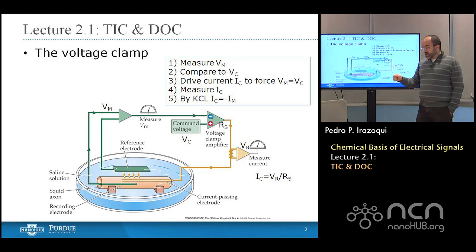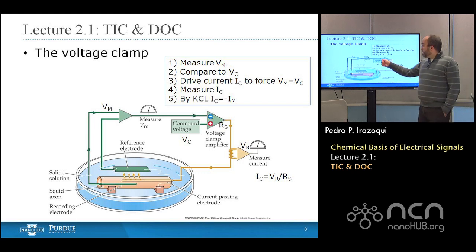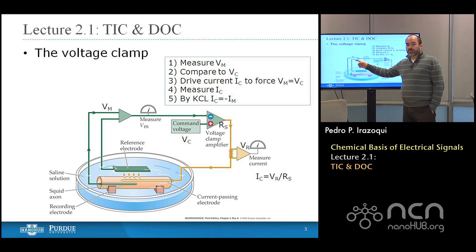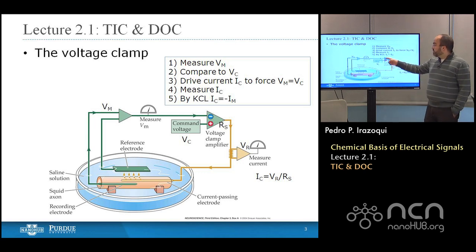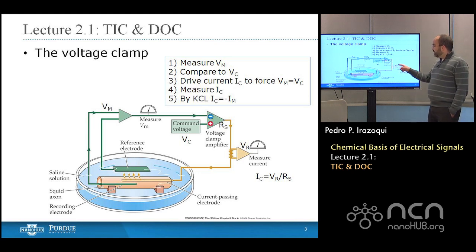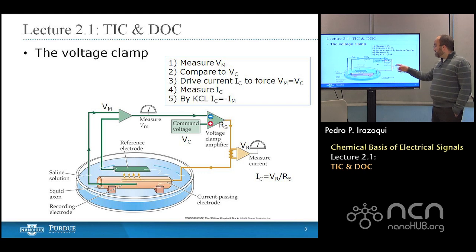With a command voltage, you can set it to any value — minus 65 millivolts, plus 20 millivolts, anything in between or above or below. When you set it, the amplifier will take the difference of the command voltage and the current membrane voltage, and produce a current that flows back into the neuron, shifting the membrane voltage until it matches the command voltage. At that point there will be zero current flowing and you'll have reached a steady state. The sensing resistor RS allows you to measure a voltage drop VR across it, and the command current equals VR divided by RS — that's just Ohm's law.